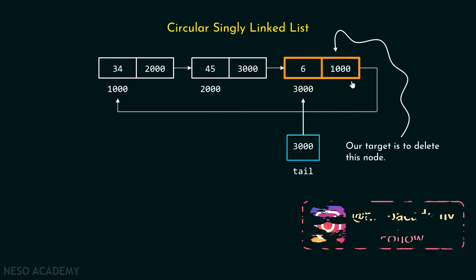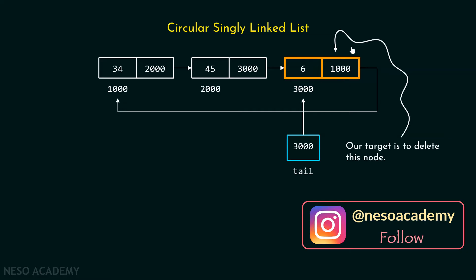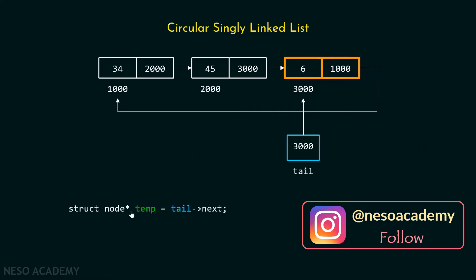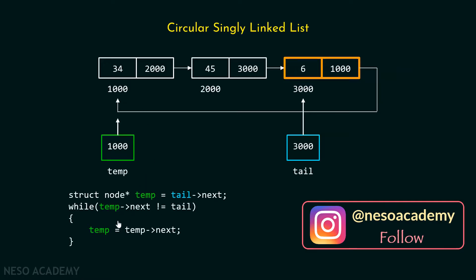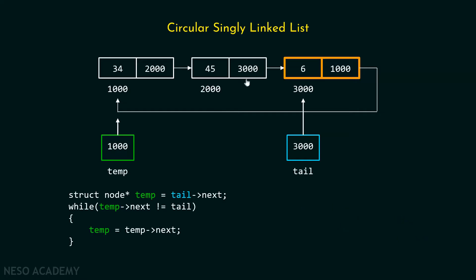Our target is to delete the last node of this list. For this purpose, I'll keep a temp pointer which must point to the first node of this list. Then I'll use a while loop for moving this temp pointer towards the right, because this temp pointer must point to the second last node of this list, so that I can update the next part of this node and then delete it.